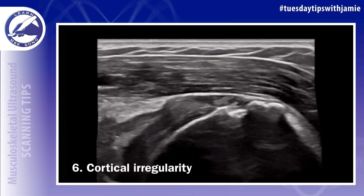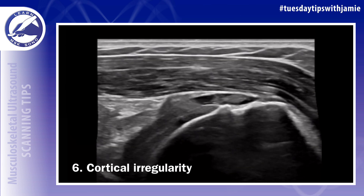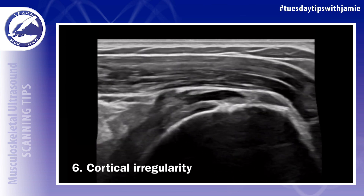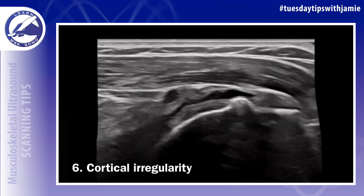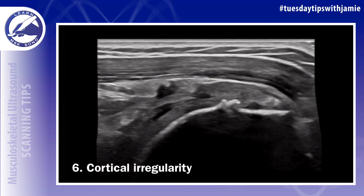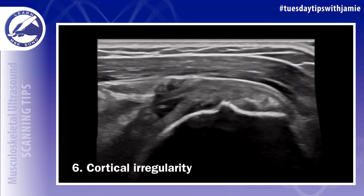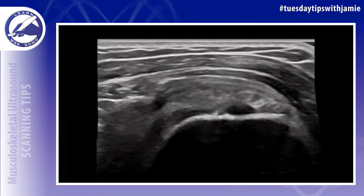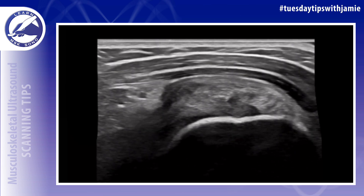Number six: cortical irregularity of the greater and lesser tuberosities are often associated with rotator cuff tears, changing the appearance of the normally smooth bone contour.